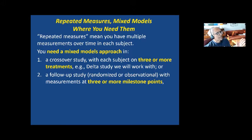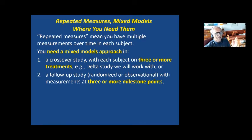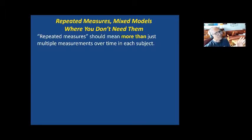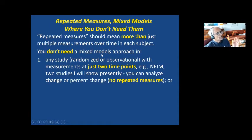Or you may have a follow-up study with measurements at three or more milestone points — for example, looking at somebody who had bariatric surgery at baseline, immediately post-surgery, three months, six months, and twelve months. Before I get into repeated measures, there are situations where you have multiple measurements where you don't need this mixed models approach. You don't need it in any study with measurements at just two points, because with only two points you can look at the change or percent change.